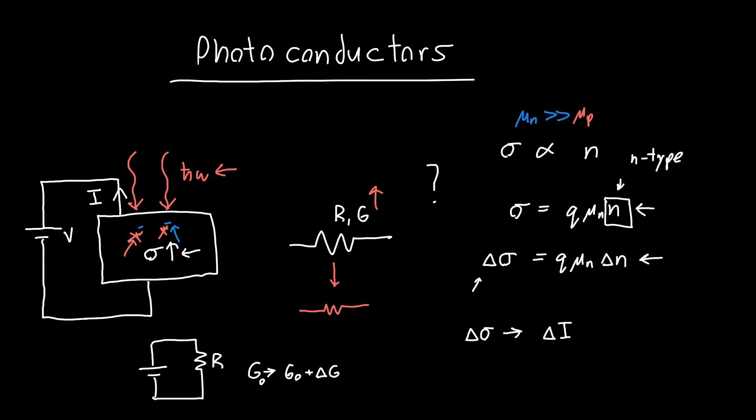Generally what we're interested in is the current that results from a given optical power change, let's call that delta P. So what we'd ultimately like to find is this delta I, the change in current that we observe coming out of this resistor, in relation to delta P.